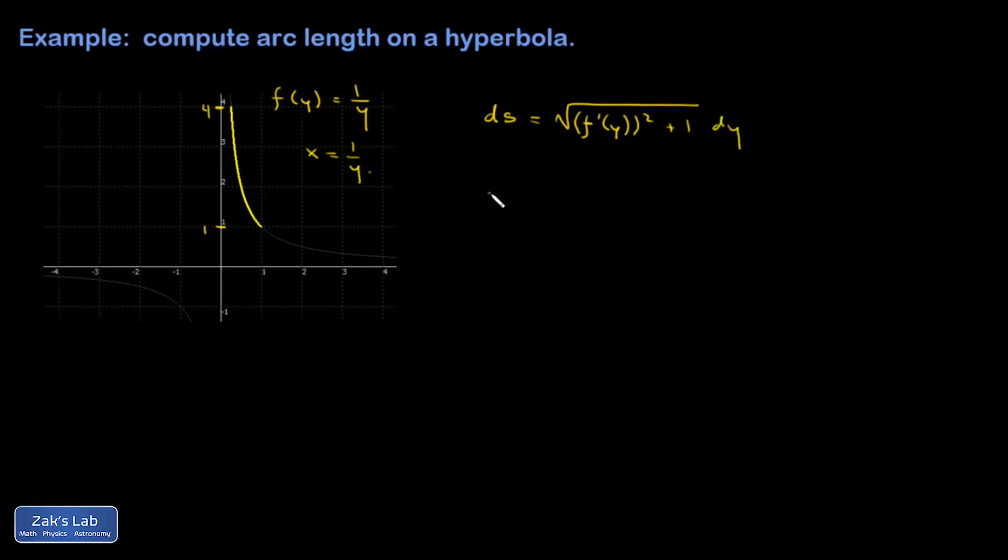And when I add all these up to get the total arc length from this interval 1 to 4, I have to differentiate this function with respect to y, which just gives me negative 1 over y squared. Square that, add 1 to it, tack on a dy,